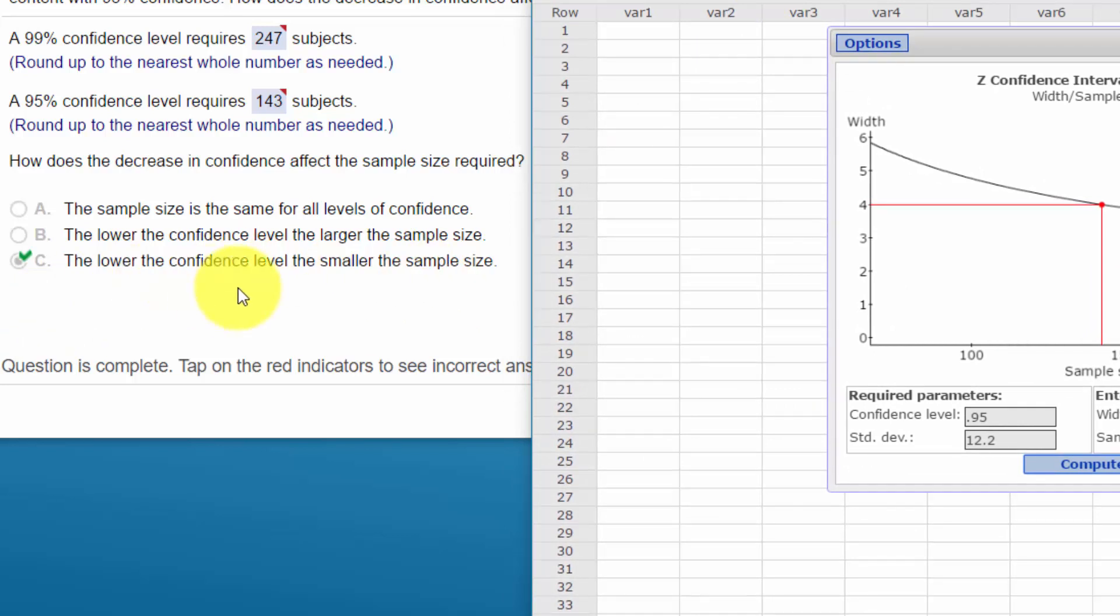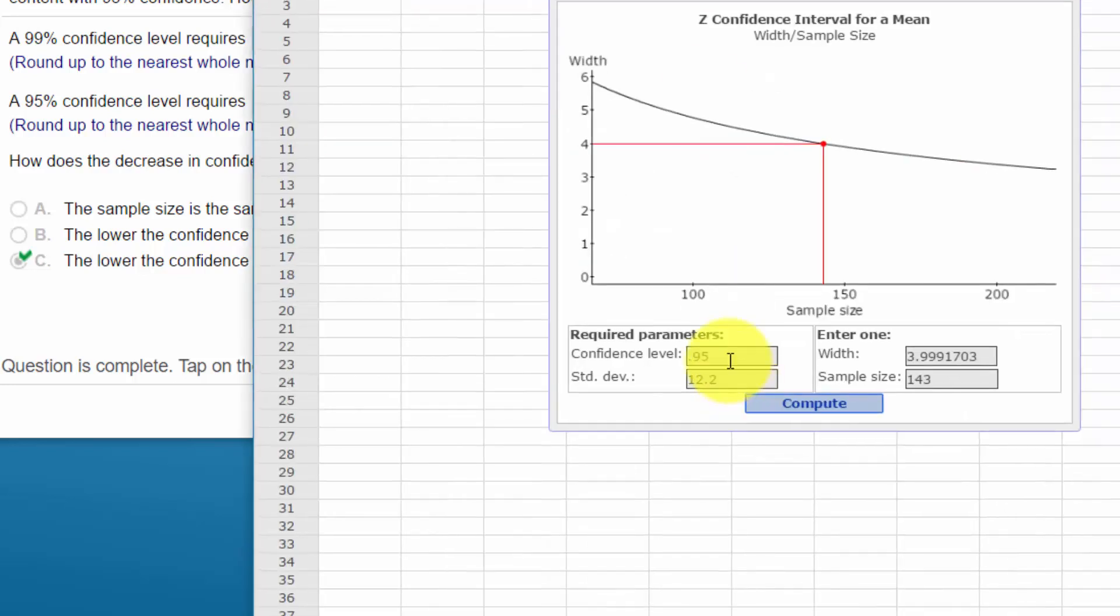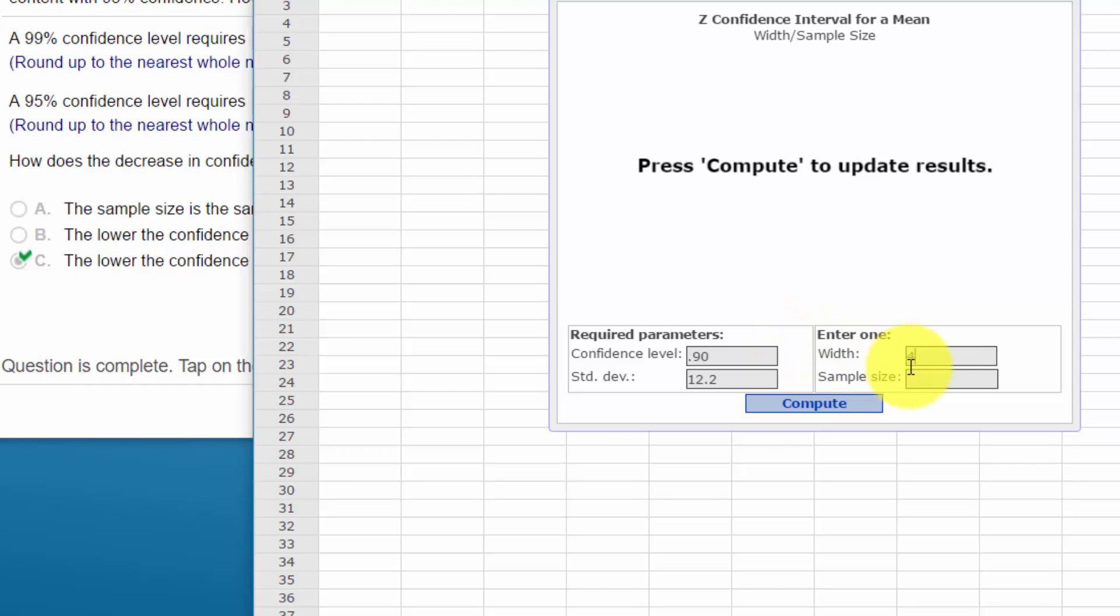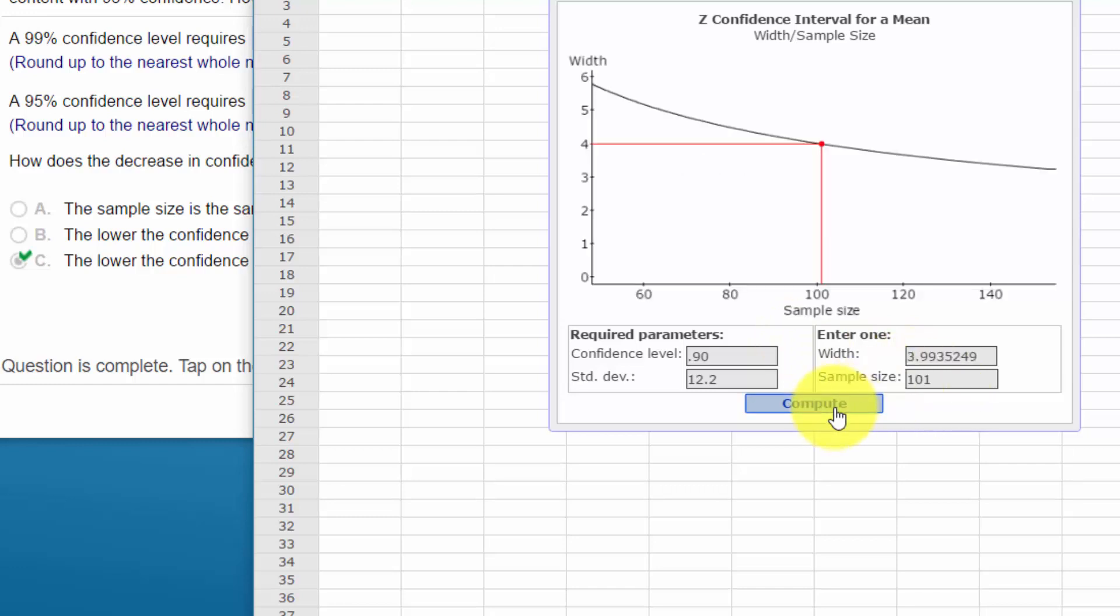The lower the confidence level, in other words, 95% confidence level requires fewer subjects than 99%. That would imply that if you went down to a 90% confidence interval, you would need even fewer subjects. And we can check that real quick. I'm just going to put 90% in there, get my four back in there, and sample drop down to 101. So that logic holds true. So I hope that helps.